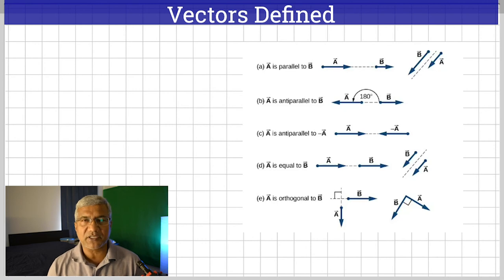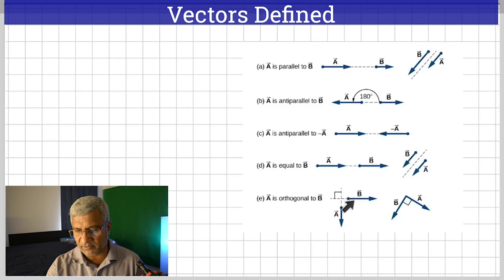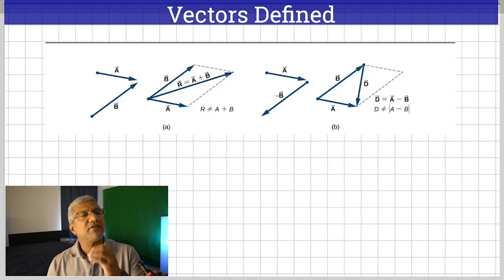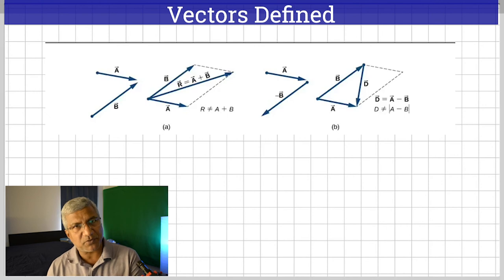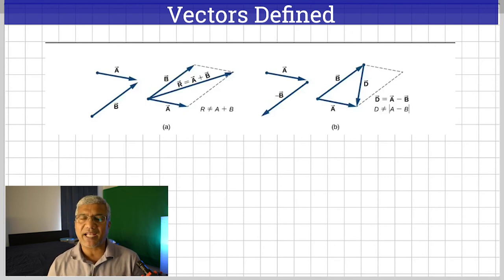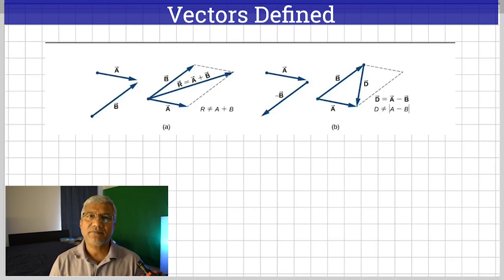There is a special case of orthogonal vectors, where the two vectors make an angle of 90 degrees — they are at right angles to each other. These are two examples of orthogonal vectors. The most important thing we need to know in this chapter is how to find the resultant of two vectors, how to add vectors, and how to subtract vectors. Let's take a look at that.